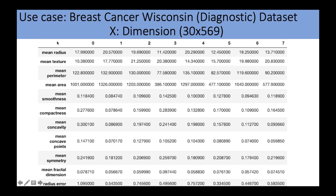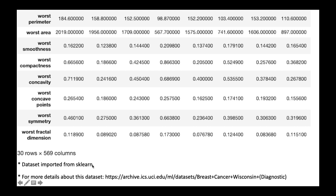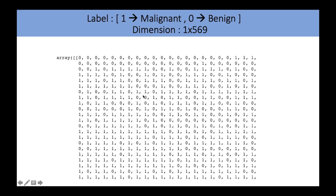Let's take a use case: the breast cancer Wisconsin dataset. The input matrix X has dimension 30×569, meaning 30 features such as mean radius, mean texture, mean perimeter, and so on. This dataset is imported from sklearn — you can visit the URL for more details. The label vector has dimension 1×569, where 1 represents malignant and 0 represents benign.